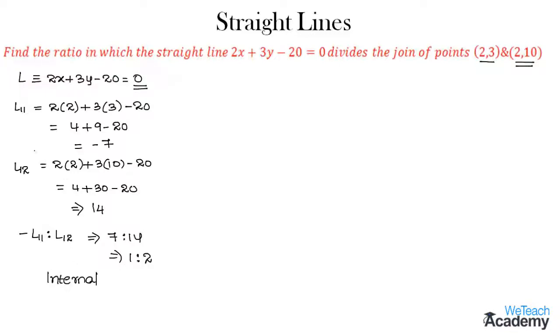For example, if L1 and L2 have same signs then the 2 points lie on the same side of the given line L equals 0 and the division is external.